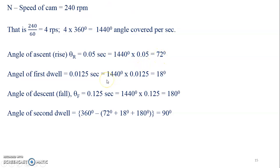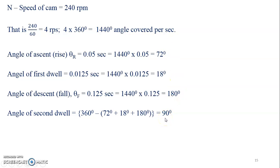Similarly, the angle of first dwell is for 0.0125 seconds: 1440 × 0.0125 = 18 degrees. The angle of descent is for 0.125 seconds: 1440 × 0.125 = 180 degrees. Once I have these three angles, I can calculate the second dwell, since all four angles must total 360 degrees — so the second dwell is 90 degrees.